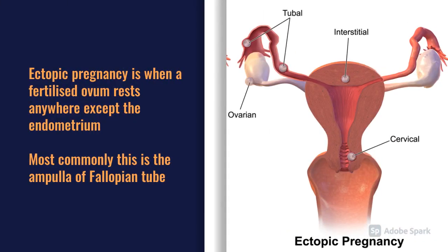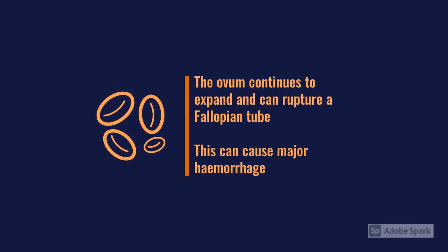Ectopic pregnancy is when you have a fertilized ovum that is resting anywhere except the endometrium. Most commonly this is in the fallopian tubes, in the ampulla. The ovum unfortunately continues to expand as though it's a normal pregnancy, and within the fallopian tube it can actually cause the fallopian tube to rupture, resulting in a major hemorrhage.